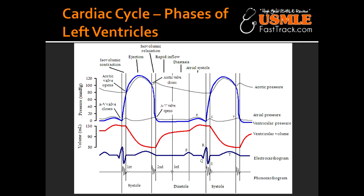Systolic ejection is the period between aortic valve opening and closing. Once the push from the left ventricle gets strong enough, it will cause the aortic valve to open and blood to start releasing. Until the aortic valve closes again and stops the blood from releasing into the aorta, this is considered the systolic ejection.